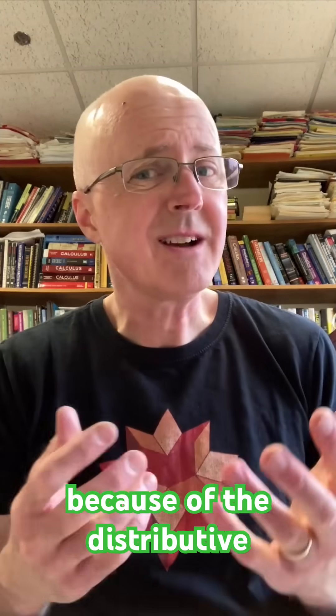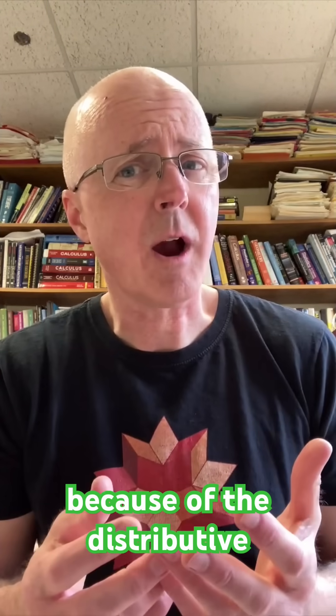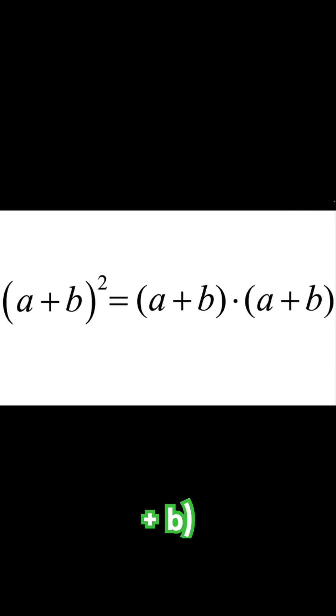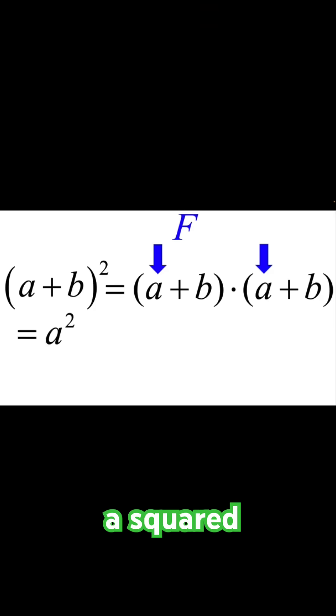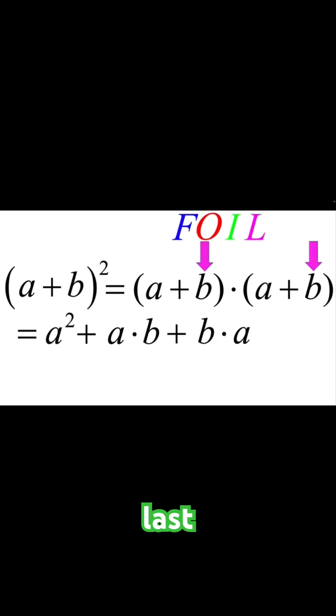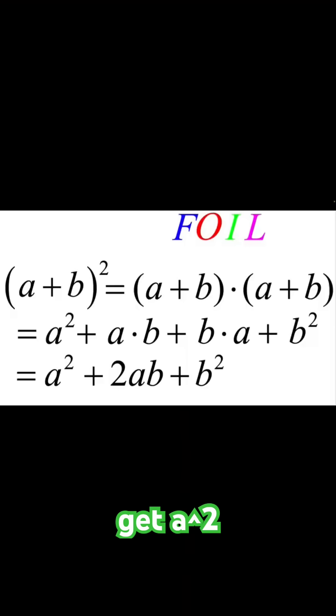So what does A plus B quantity squared equal? Because of the distributive property, you have to FOIL it — F-O-I-L. A plus B quantity squared equals A plus B times A plus B. First times first equals A squared. Outside times outside is A times B. Inside times inside is B times A, and last times last is B squared. Add them all together and you get A squared plus 2AB plus B squared.